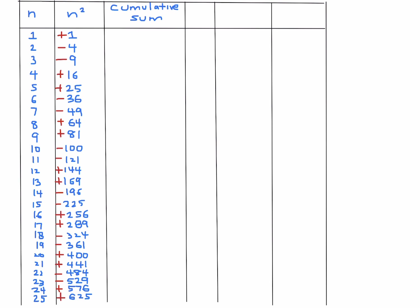Now compute the cumulative sums at each stage. For n=1: sum is 1. Add terms 2 and 3: 1 − 4 = −3. Add term 3: −3 − 9 = −12. Add term 4: −12 + 16 = 4. Add term 5: 4 + 25 = 29. Add term 6: 29 − 36 = −7. Continue filling out cumulative sums for the first 20 or so terms.